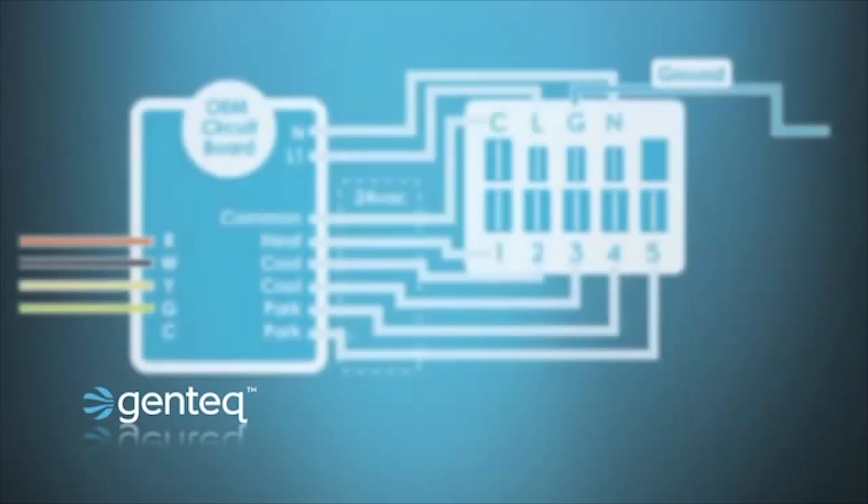Here we see an example of an HVAC system with an X13 motor. This is a 115 volt system, it's got line one and neutral connected to the motor and it has all five taps of the motor connected to the OEM circuit port.